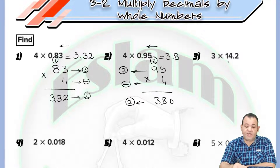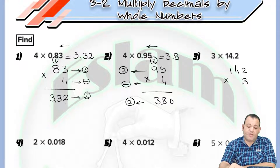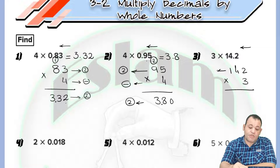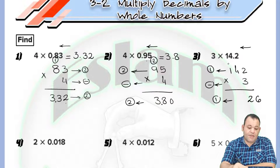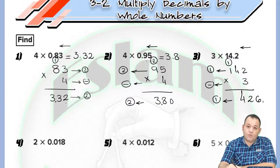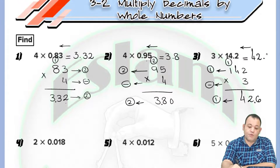In question number 3, we have 3 times 14.2. We treat the first number as 142 and multiply by 3. Counting from the right, there is only one digit to the right of the decimal, and no decimal in the second number — so we place the decimal point after one digit in the product. 3 times 2 equals 6; 3 times 4 equals 12 — write 2 and carry 1; 3 times 1 equals 3, plus 1 equals 4. Counting one digit from the right gives us 42.6.